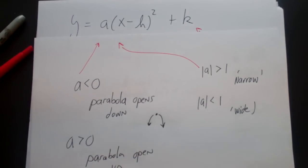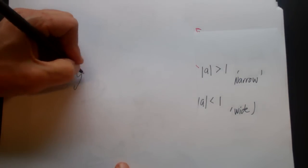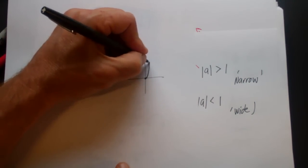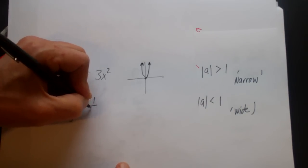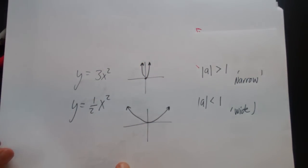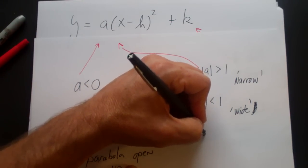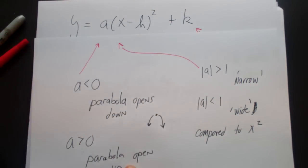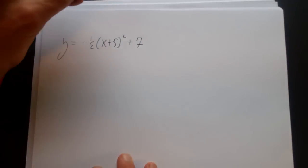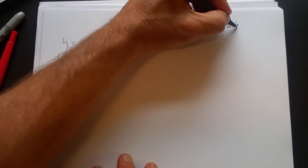What do we mean by wide or narrow? You can compare two parabolas: y equals three x squared will be very narrow, while y equals one half x squared will be fairly wide. Wide or narrow is really relative — it's wider or narrower compared to y equals x squared. Let's look at quick examples. Take y equals negative one half times x plus five squared plus seven, and ask: does this flip and is it wide or narrow?